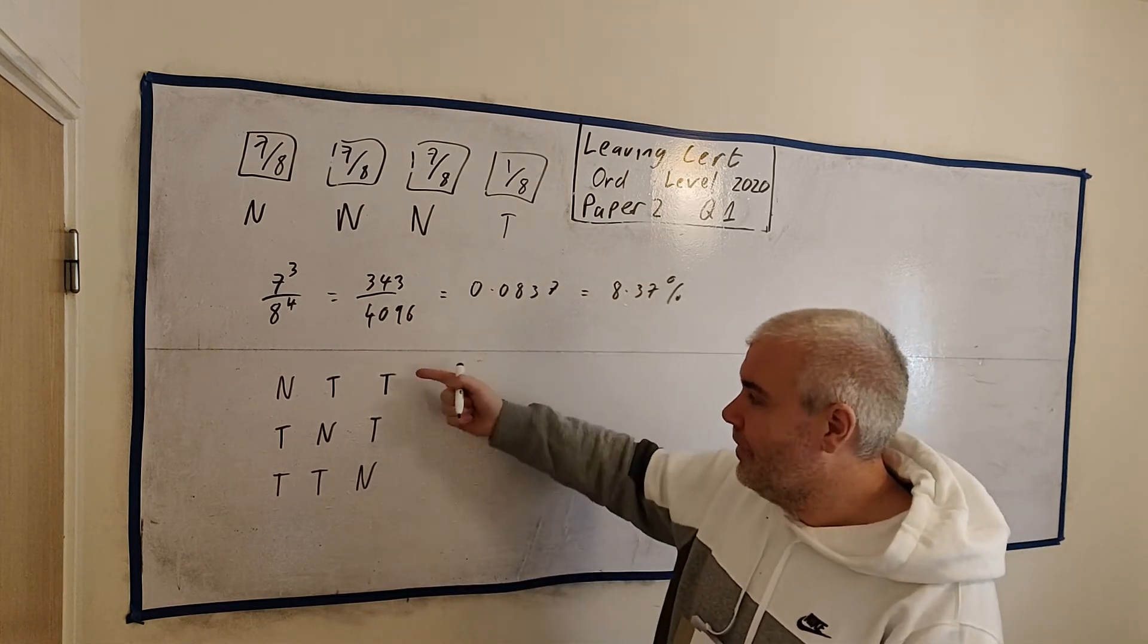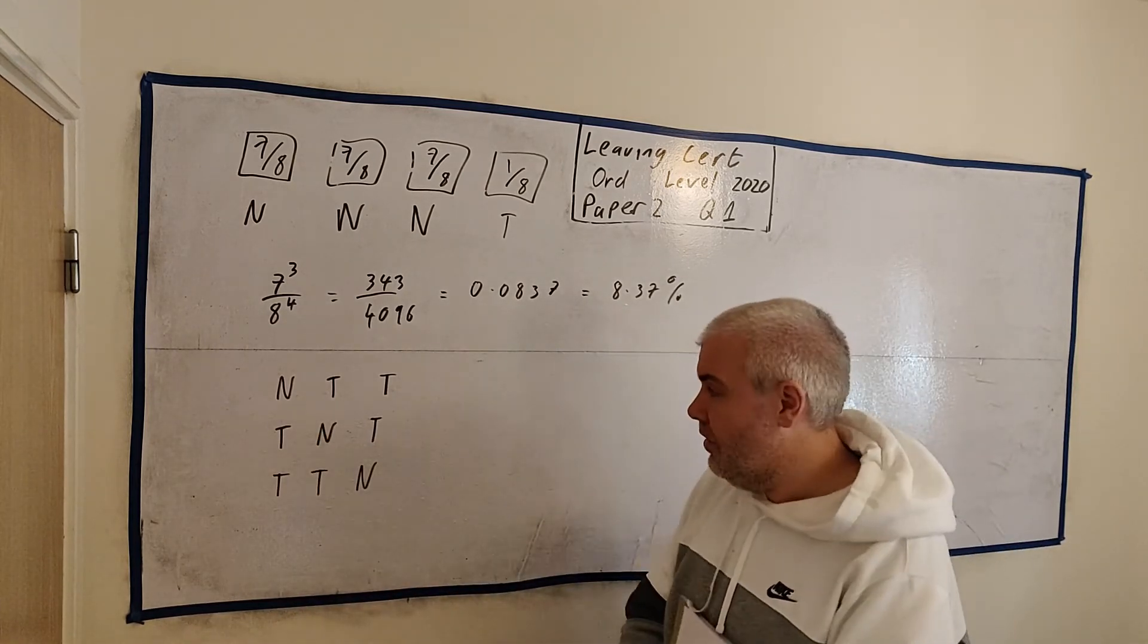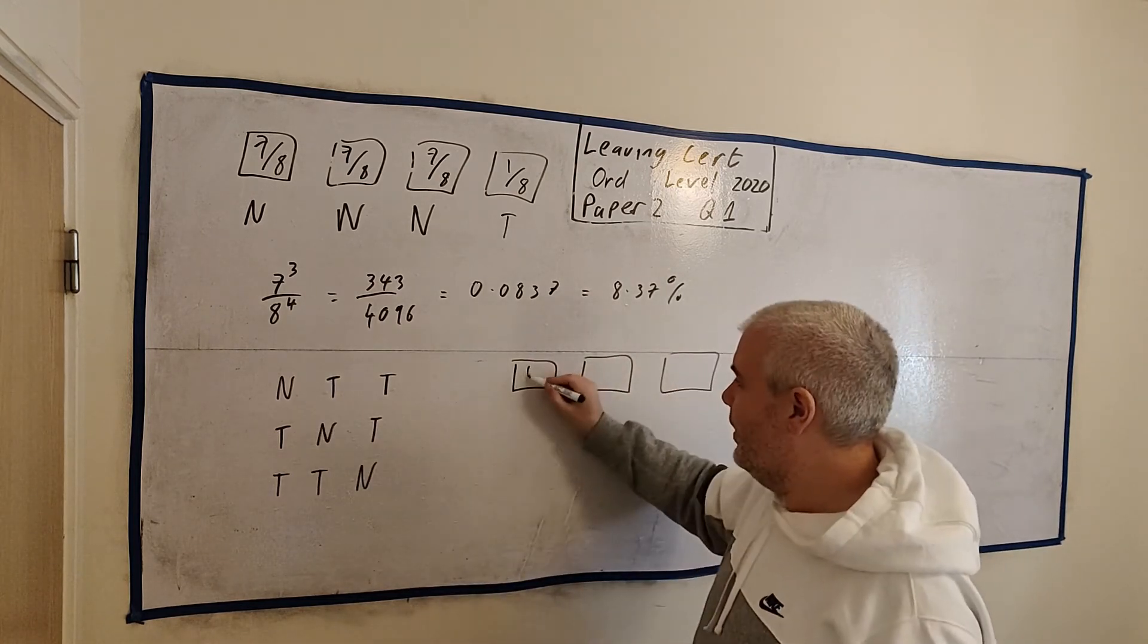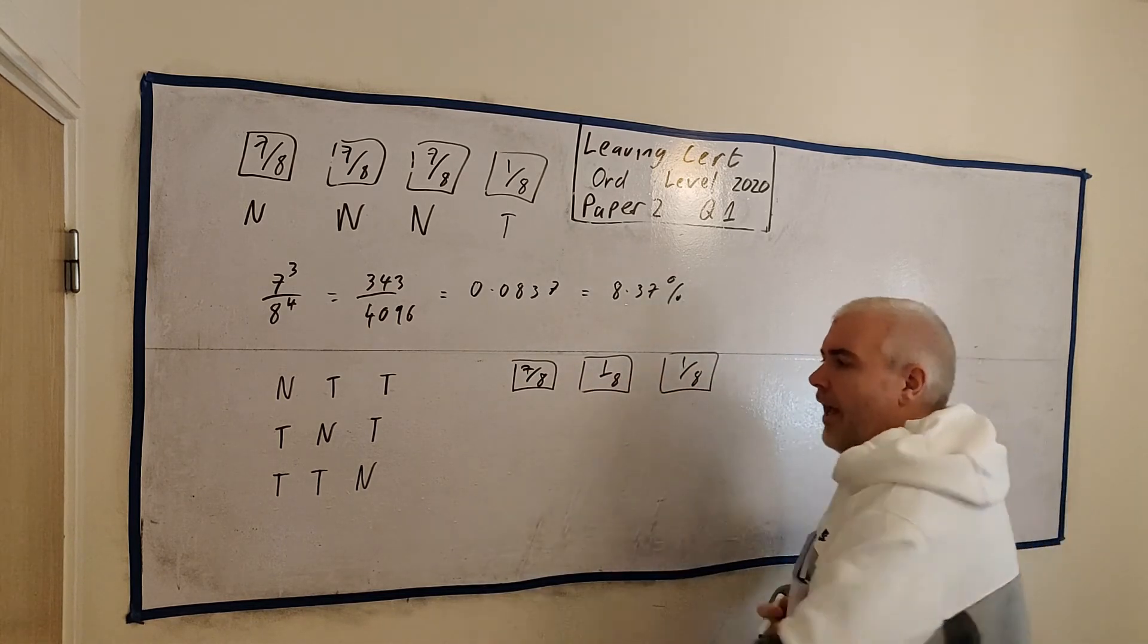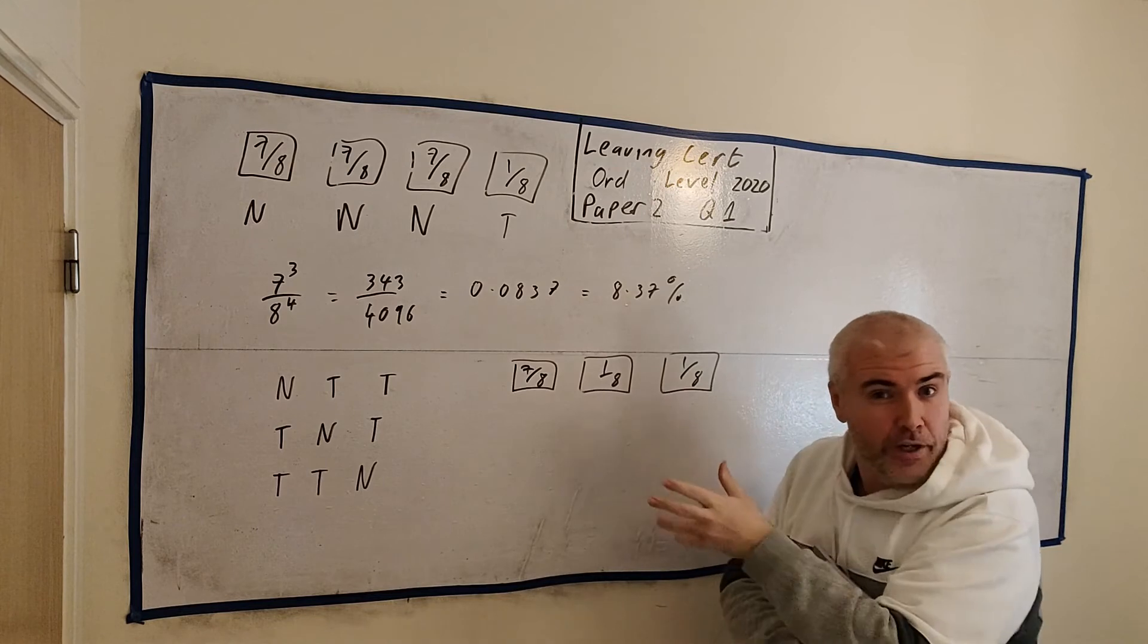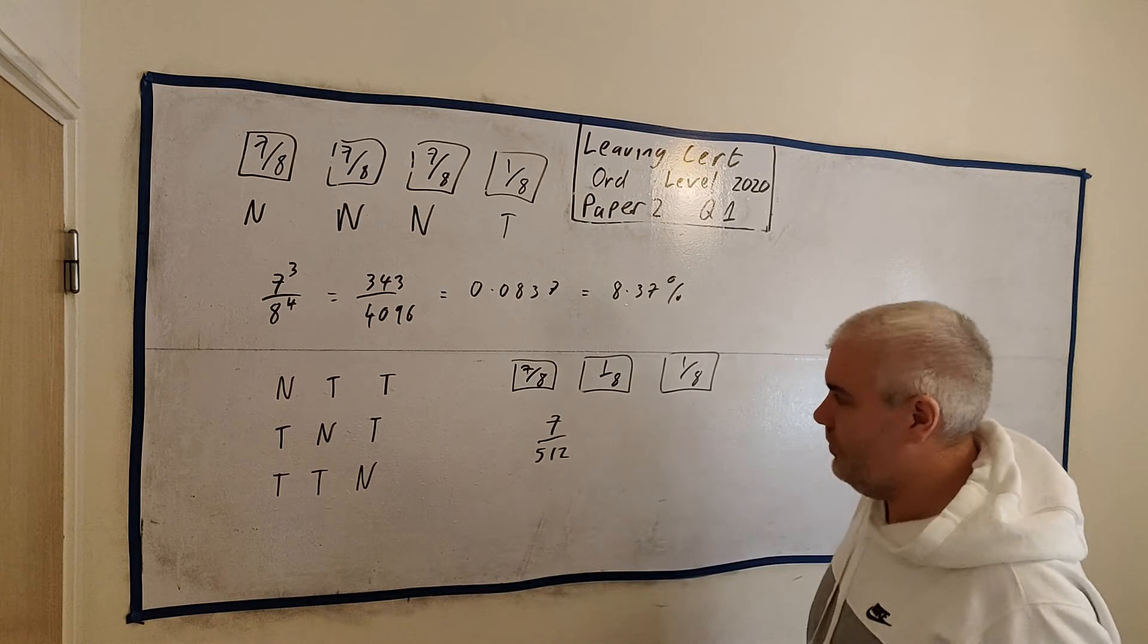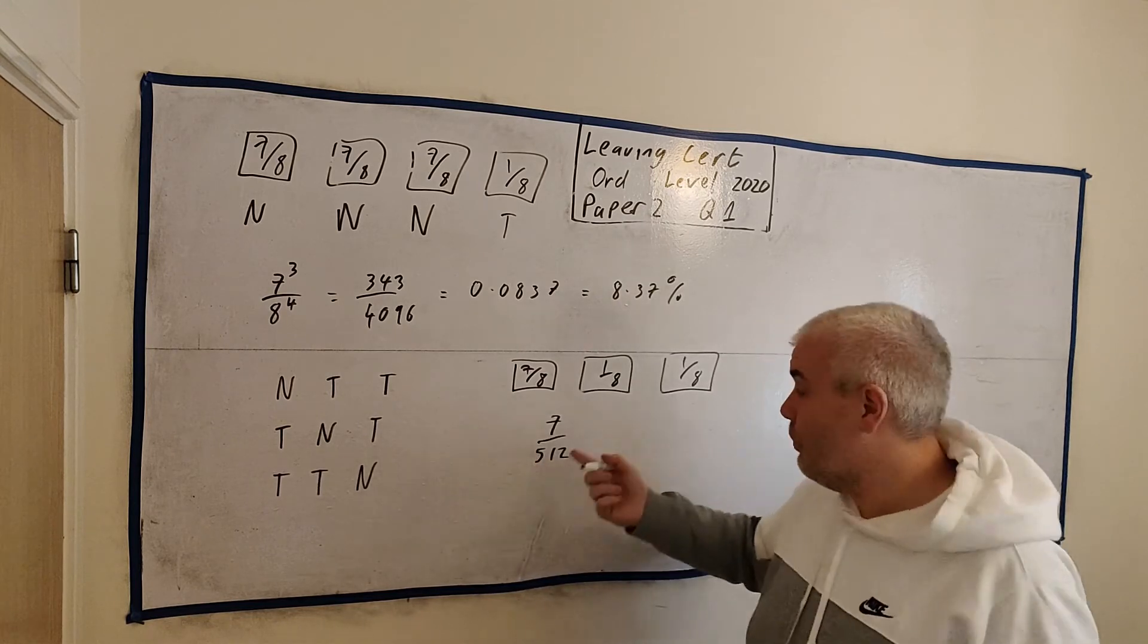So we'd have to work out the probability of each of these. Well, they're all the same. I'll show that. And then we add them together, or we multiply 1 by 3 because they're all the same. So let's work out the probability of any one of these now. Not tennis is 7 over 8. Tennis is 1 over 8, and tennis is 1 over 8. This guy would have been just 1 over 8, 7 over 8, and 1 over 8. It would work out the same. When we multiply this all together, we just get 7 on the top. And multiply the whole bottom here, we get 512. And we would have got the same answer for any of these. So we need 3 of these.